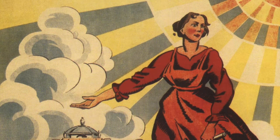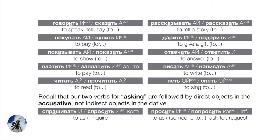Surveying a list of common verbs — and we've seen these pairs already — it won't be too hard to understand why they can all be followed by a dative. Говорить/сказать: we say something to someone. Рассказывать/рассказать: we tell a story to someone. Покупать/купить: to buy a present for someone. Дарить/подарить: to give a gift to someone. Показать: to show. Отвечать/ответить: to answer.